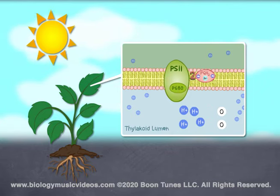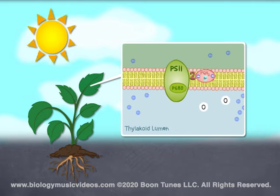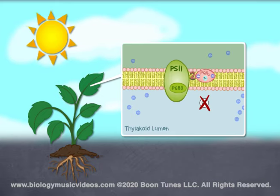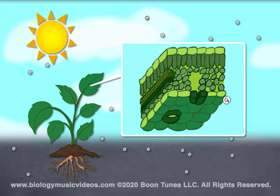The protons quickly take a place in the thylakoid lumenal space. The oxygen atoms, two at a time, form oxygen gas as they combine. The oxygen isn't needed here, so it's released into the air.